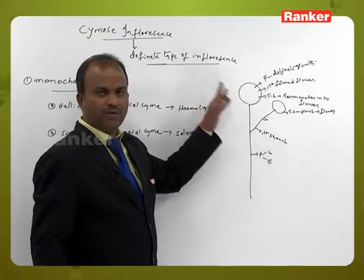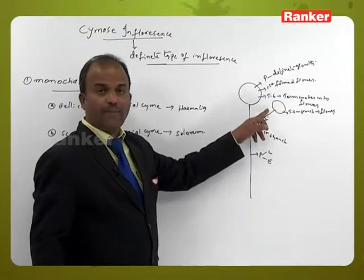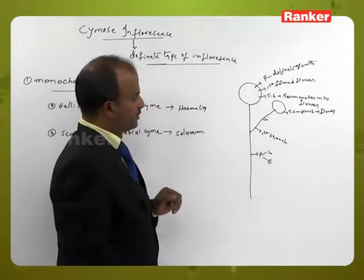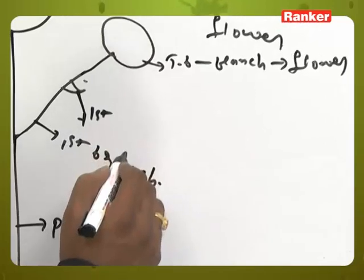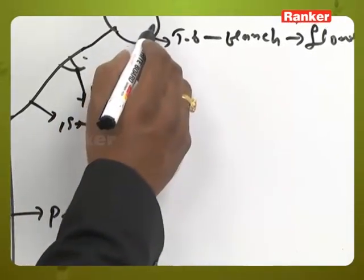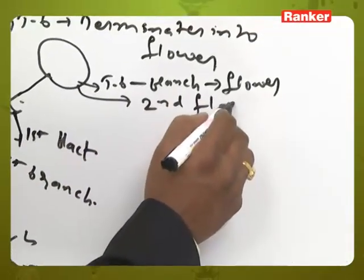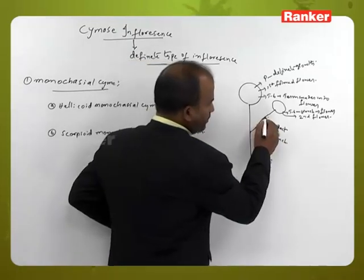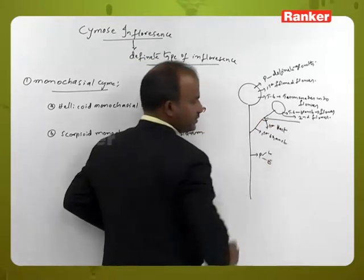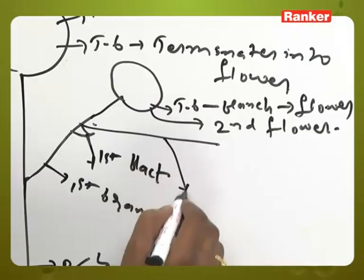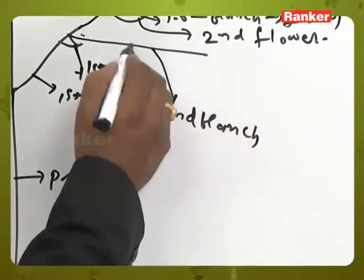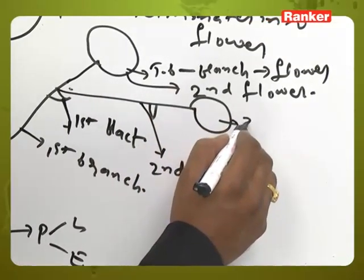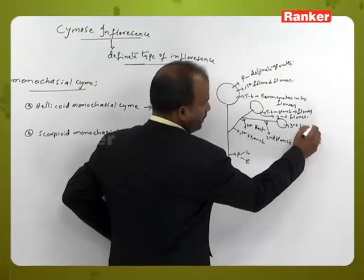The second flower is opposite to the first branch. In monochasial cyme, flowers arise towards the apex of the branches, and bracts are opposite to the flowers. The first bract is opposite to the second formed flower. From the base of the second formed flower, the second branch arises, which also terminates into the third flower.